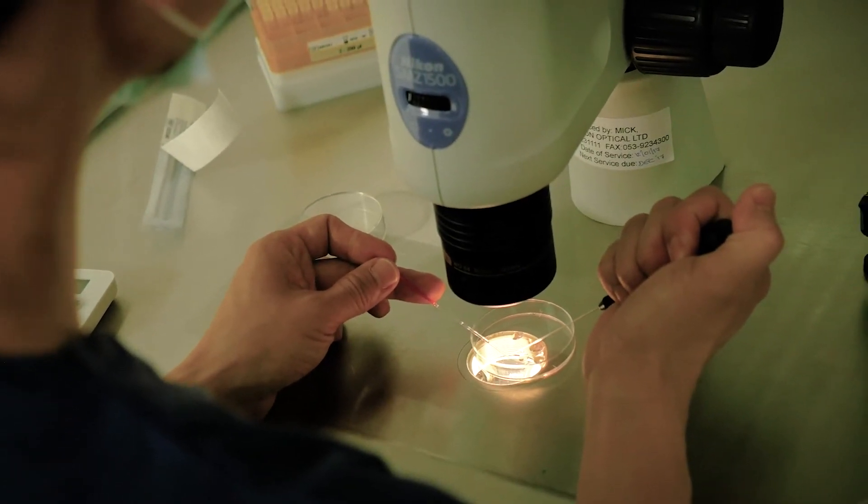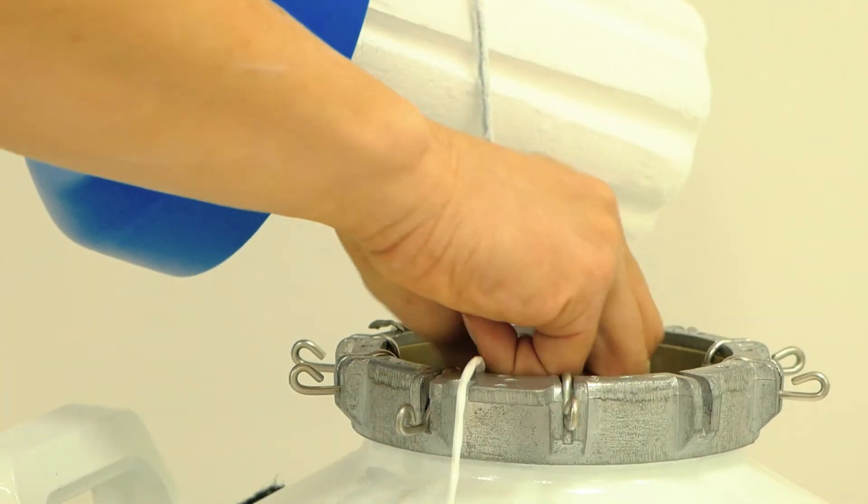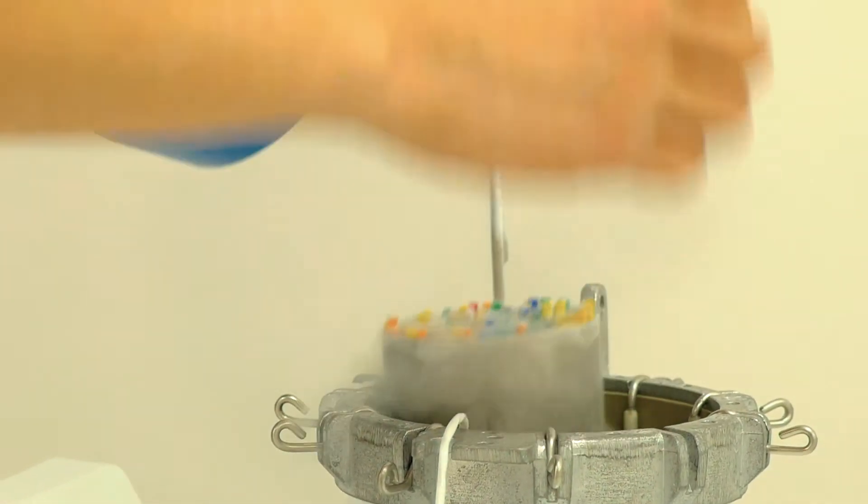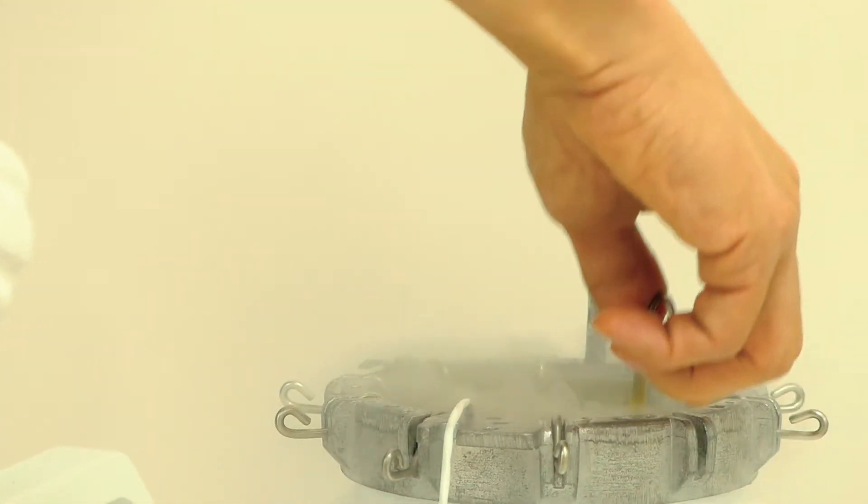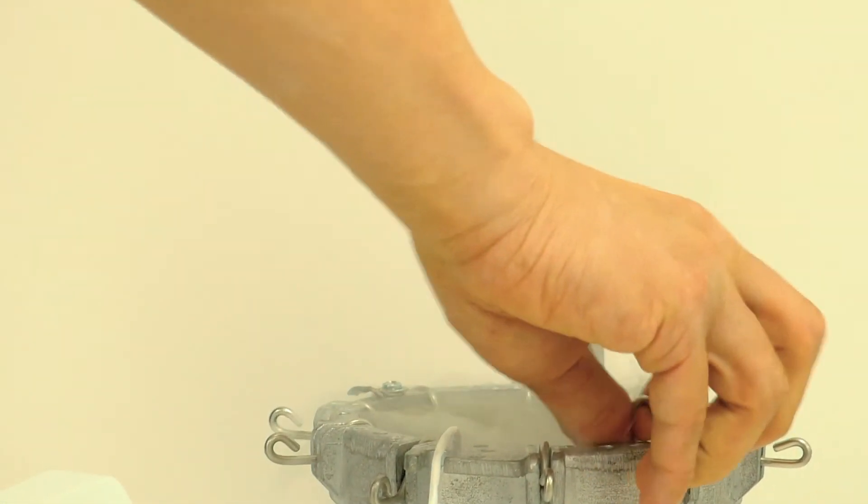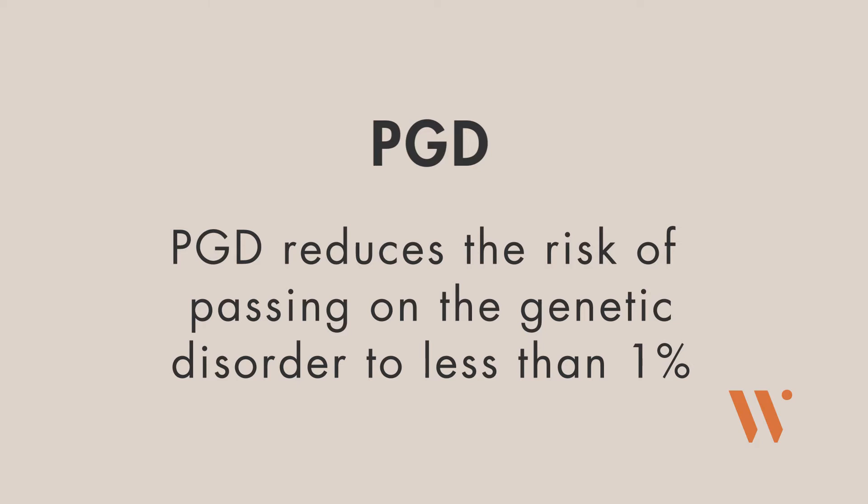The couple can avoid transmitting the genetic disease that they know is a real possibility for them. Generally with these genetic situations, once they know that they are at risk, there's a 25 to 50 percent chance that any child they have will be affected by the same condition, and by doing PGD we reduce that to an almost zero risk.